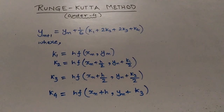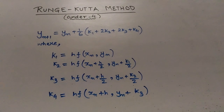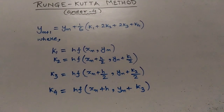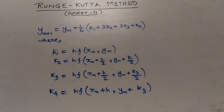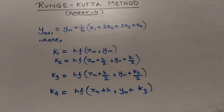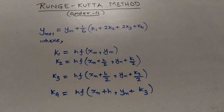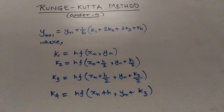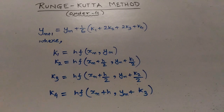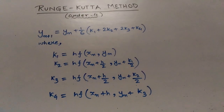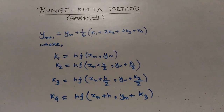k2 is h into f(x_n + h/2, y_n + k1/2). k3 is h into f(x_n + h/2, y_n + k2/2). And finally, k4 is h into f(x_n + h, y_n + k3).